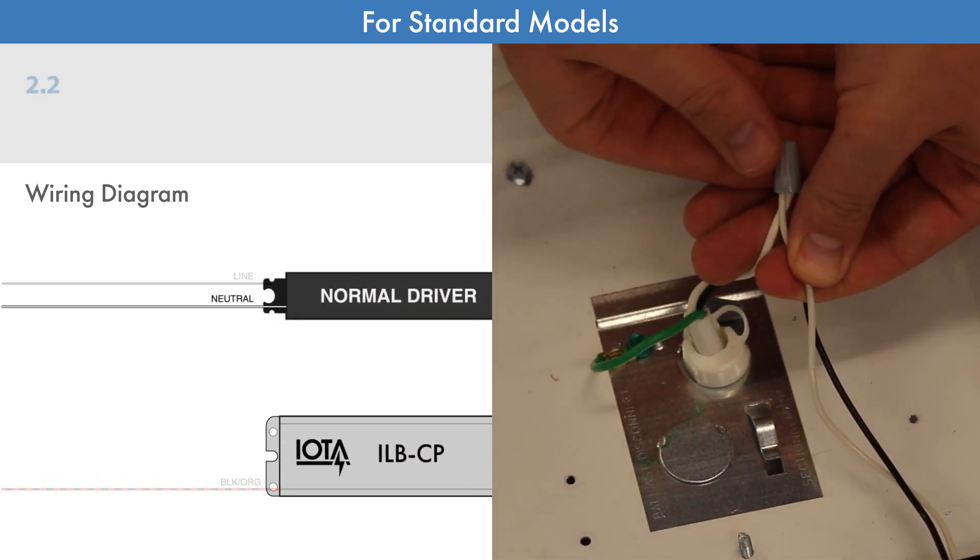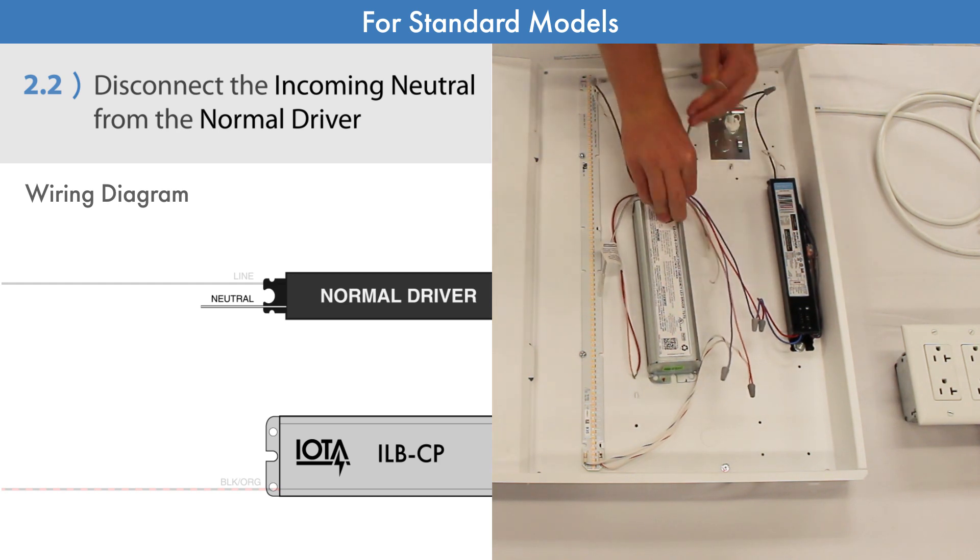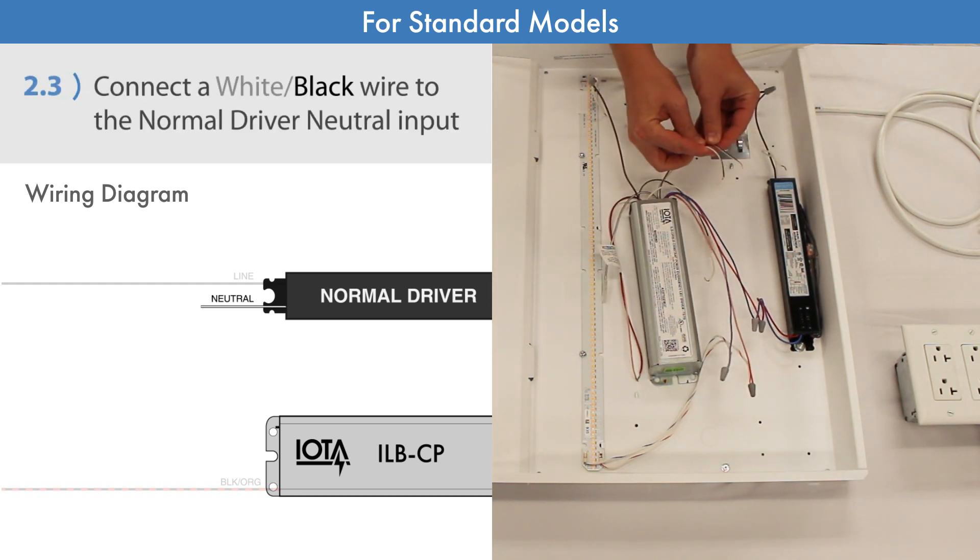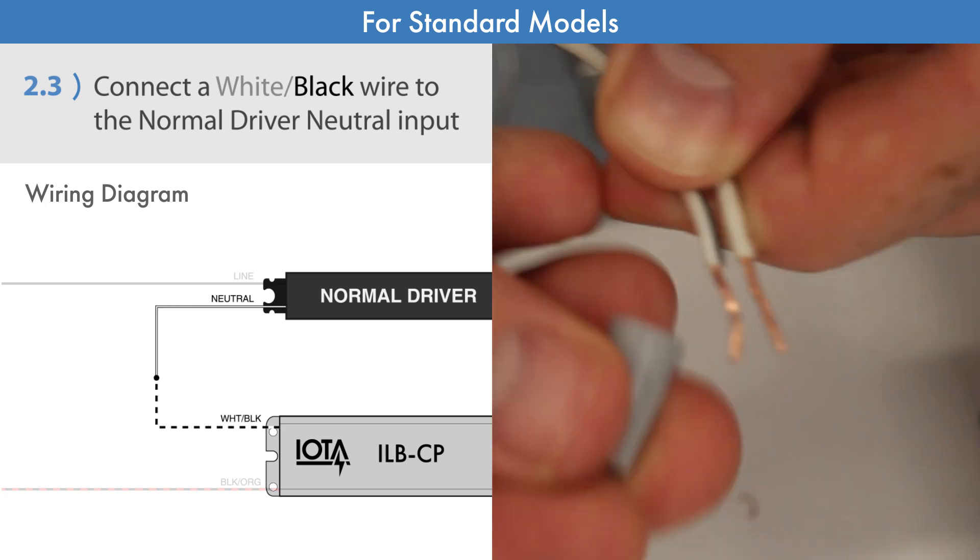Disconnect the incoming neutral wire from the normal driver. Then take one of the white-black wires from the ILB-CP, it doesn't matter which, and connect it to the normal driver's neutral input.